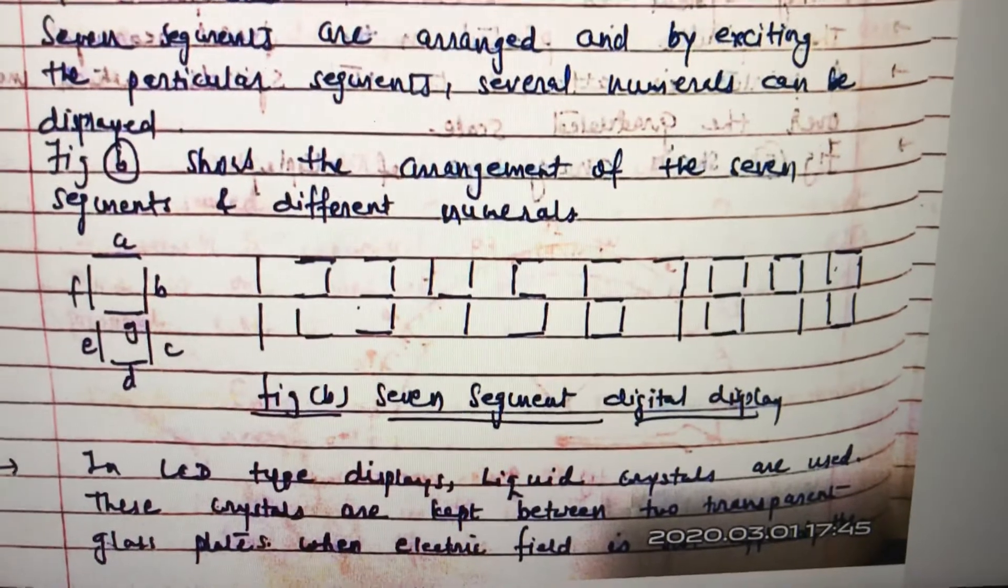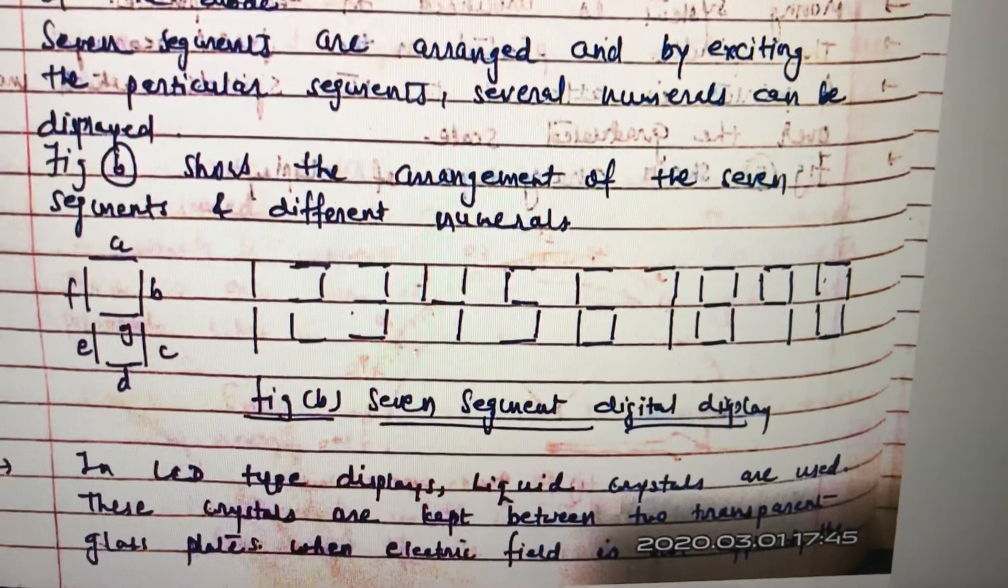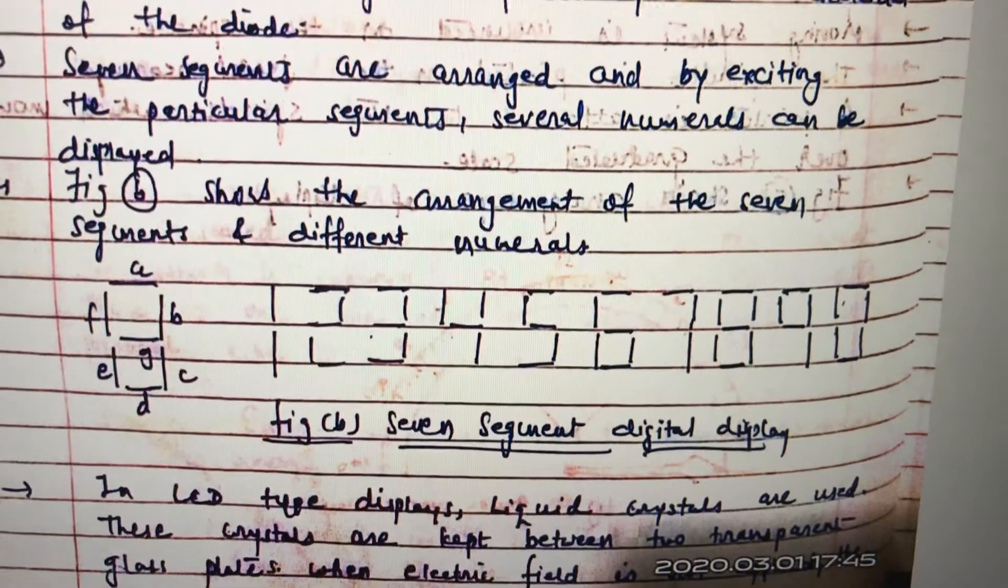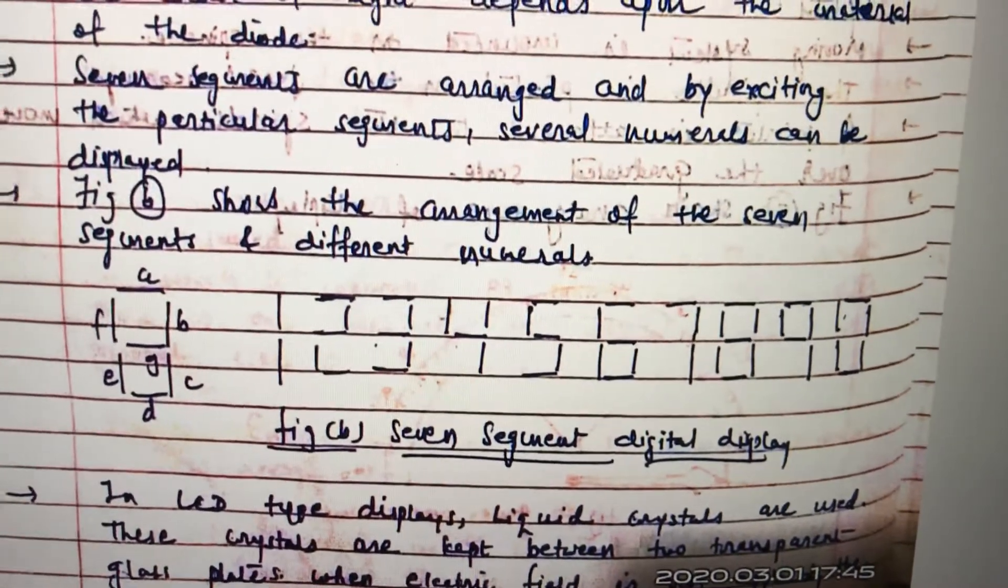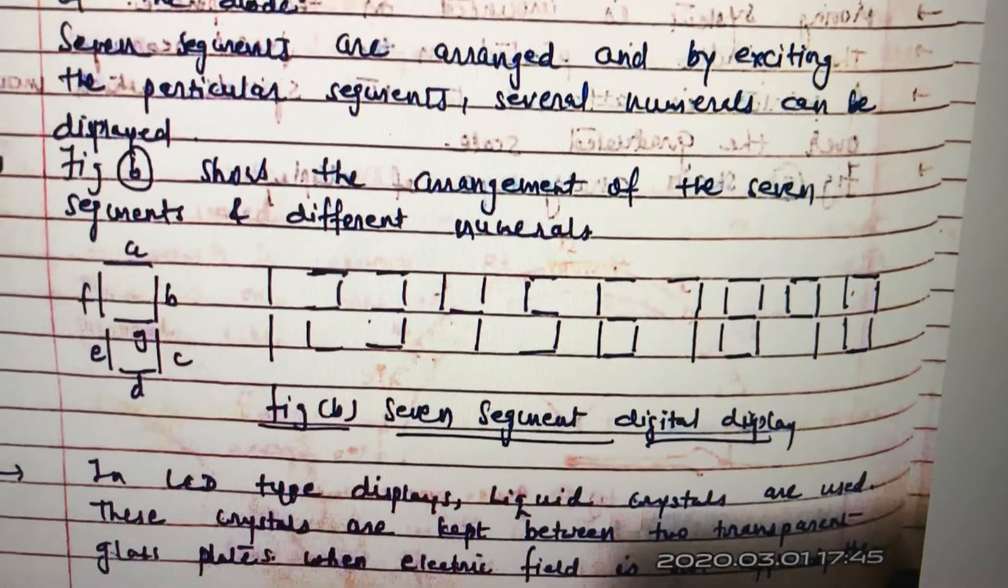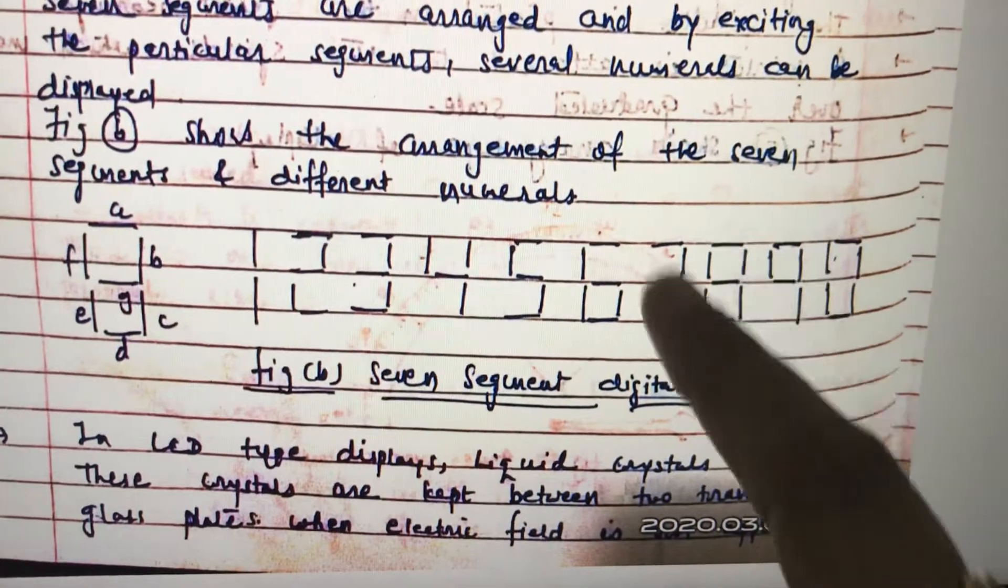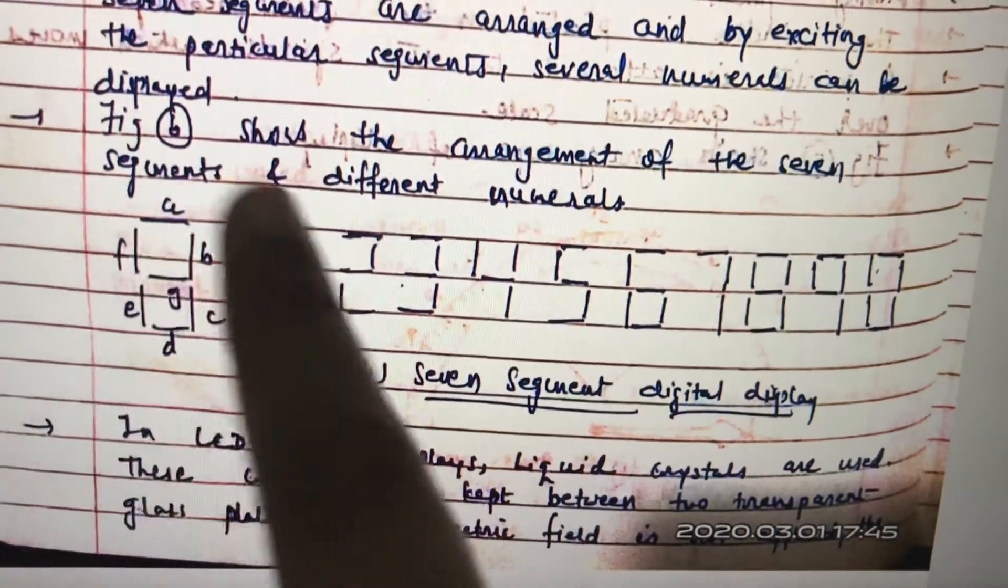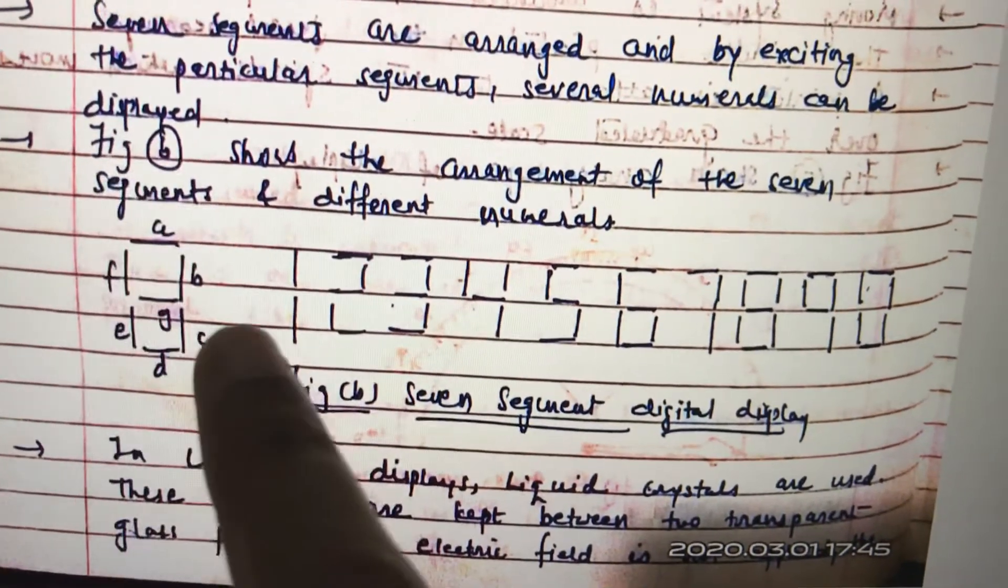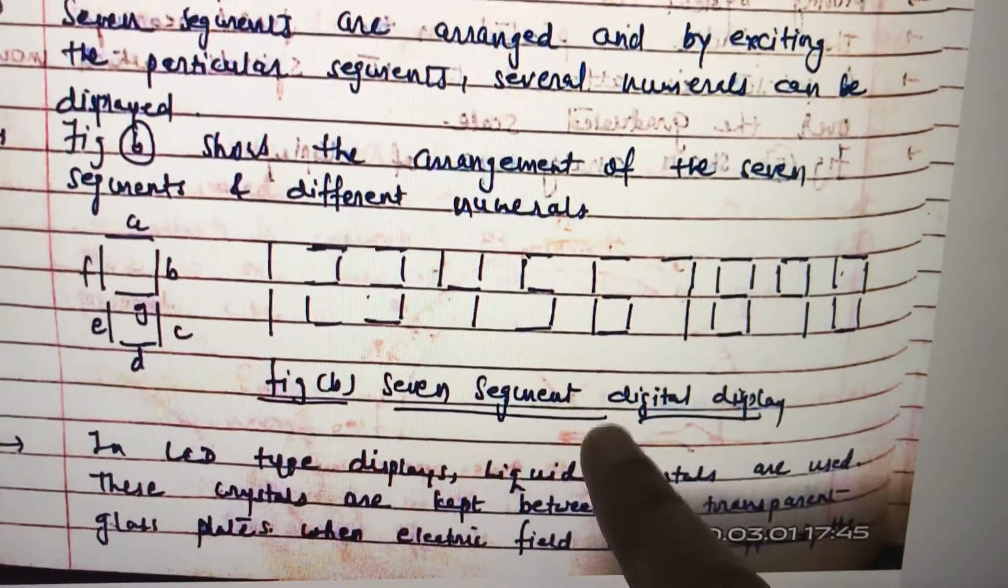So the forward bias condition will be for a, b, g, c, and d for three, and so on. If it is asked in a short type of question or MCQ - in which number, if you are going to display which number, will all the LEDs be glowing? Your answer must be eight, because eight is the part where all seven segments are going to be in forward bias and all LEDs will be glowing.